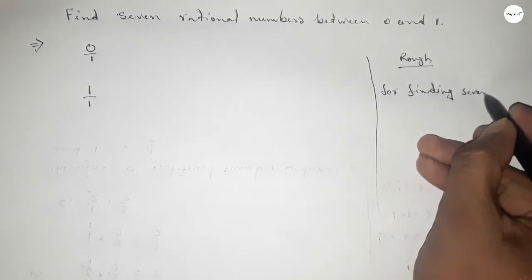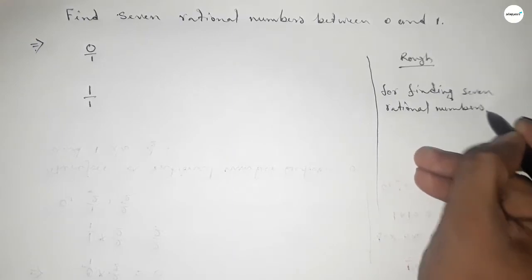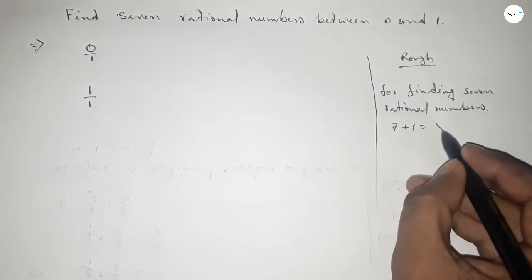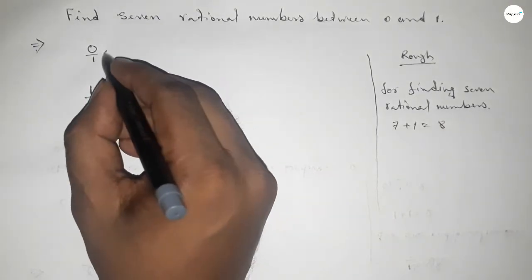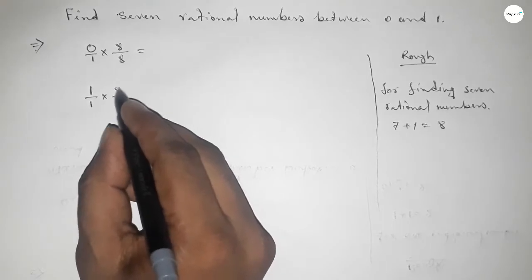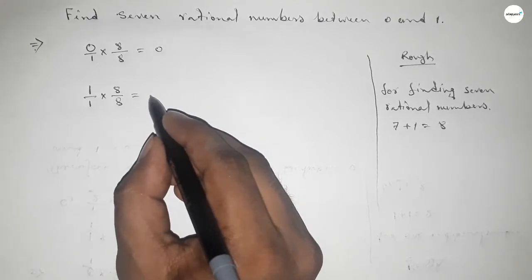We should multiply both numbers by 7 plus 1 equals 8, with both numerator and denominator. By this way, okay, so this is 0 over 8 and this is 8 over 8.